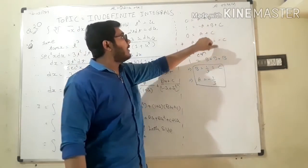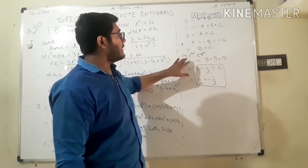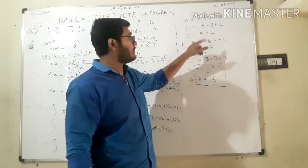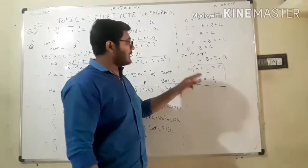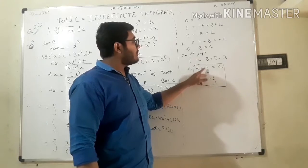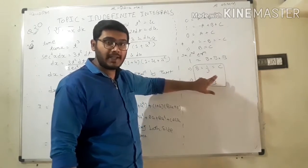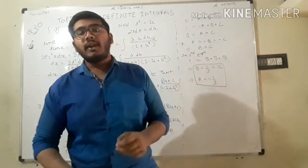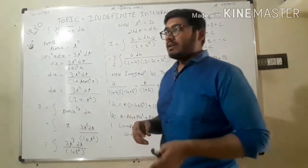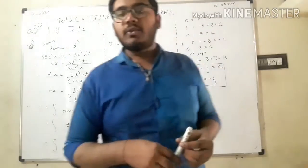From equation 1: A = -B. From equation 3: A = -C, so B = C. Substituting into equation 2: -A + B + C = 1 gives B + B + B = 1, so 3B = 1, B = 1/3. Therefore C = 1/3 and A = -1/3.